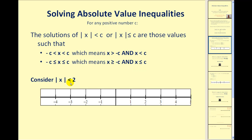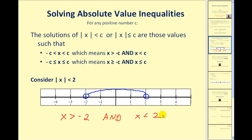Let's consider the absolute value of X less than 2. Remember that absolute value is a number's distance from 0, so we want all the numbers whose distance from 0 is less than 2 units. We could go to the right with an open point on 2, but we can't go any further from 0 on the left than an open circle on negative 2. This interval represents all the numbers whose distance from 0 would be less than 2. Using inequalities, we'd have X greater than negative 2 and X less than positive 2, connected with AND.